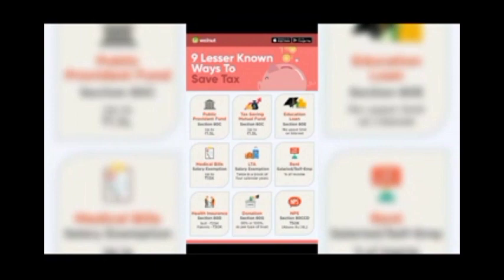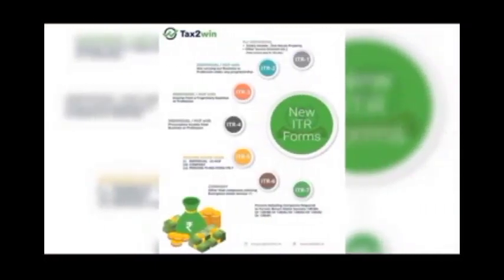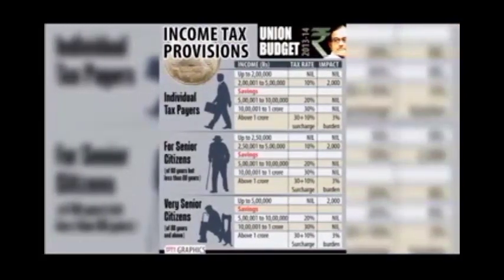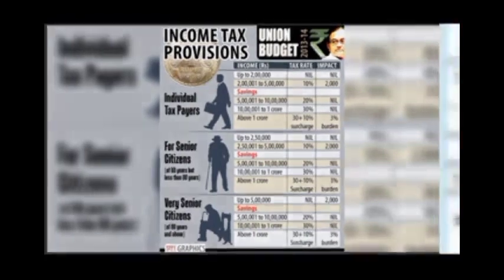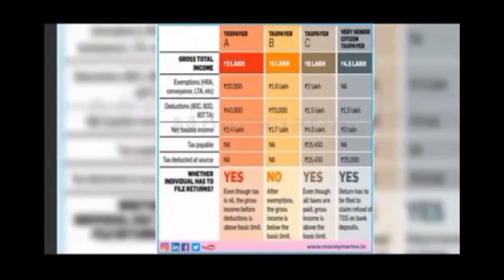In order to file, you have six types of ITR forms. ITR 1 is for salaried people whose income is up to 50 lakhs in a year, with one house property, interest and dividend. Agriculture income of less than 5,000 also comes under it.